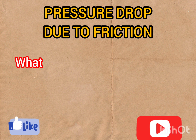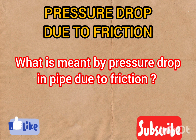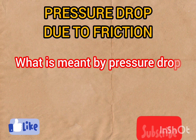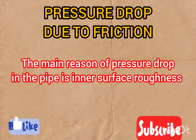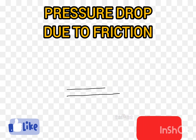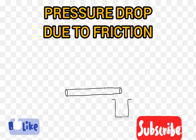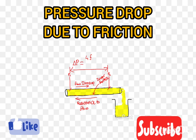Before we jump into calculations, let's grasp the concept. Pressure drop due to friction occurs as fluid flows through a pipe, and it is primarily caused by the friction between the fluid and the inner surface of the pipe. This friction results in energy losses and a decrease in pressure as the fluid moves from one point to another point in the pipe.